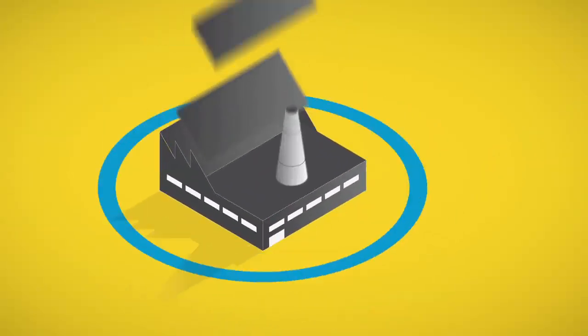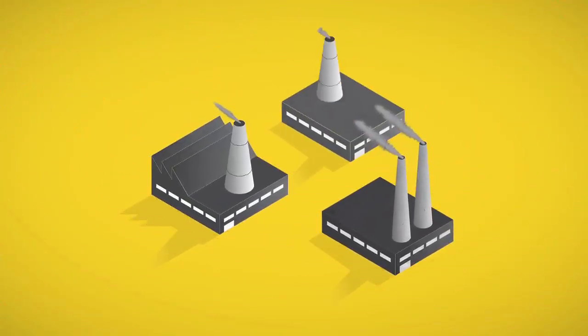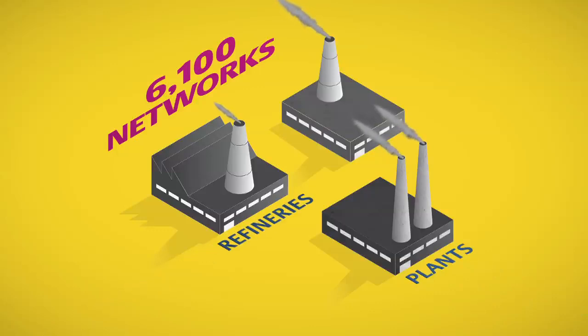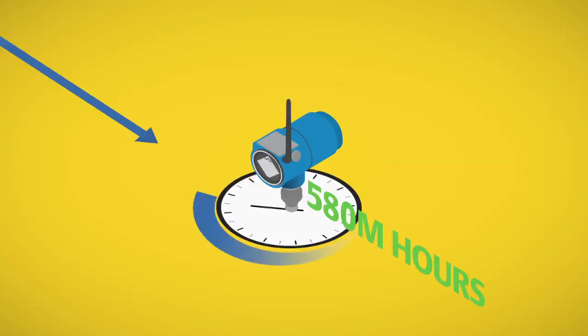Emerson is the established leader in wireless networking solutions for industrial applications, with wireless monitoring devices in more than 6,100 networks, serving plants, refineries, and factories worldwide, logging more than 580 million transmission hours.